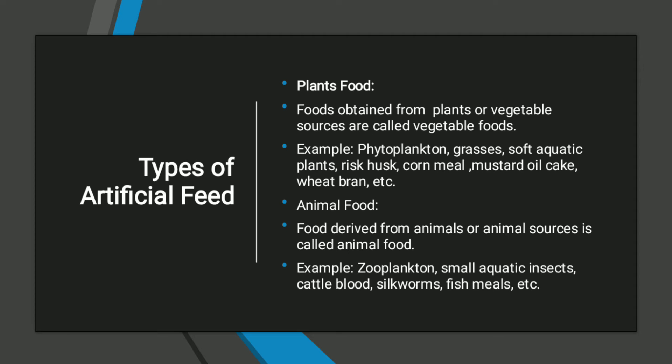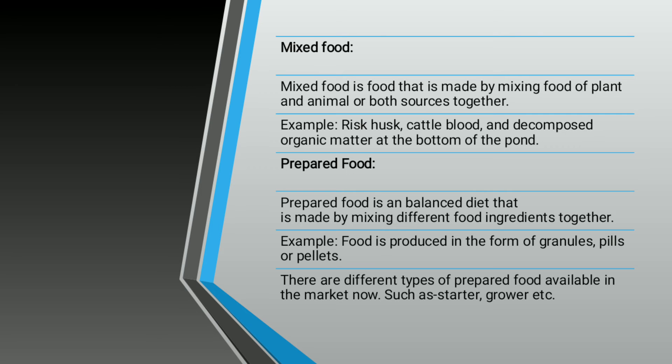Types of artificial feed can be classified as follows. Plant food: foods obtained from plant or vegetable sources, such as phytoplankton, grasses, soft aquatic plants, rice husk, oatmeal, mustard oil cake, and wheat bran. Animal food: derived from animal sources, examples include zooplankton, small aquatic insects, cattle blood, silkworms, and fish meal — all obtained from animal sources. Silkworms are also used in silk production for cloth manufacturing.